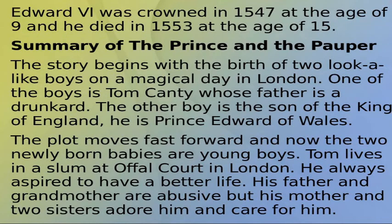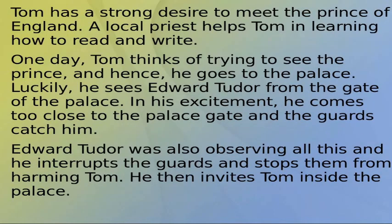The story begins with the birth of two look-alike boys on a magical day in London. One of the boys is Tom Canty, whose father is a drunkard. The other boy is the son of the King of England — Prince Edward of Wales. The plot moves forward and the two newly born babies are now young boys. Tom lives in a slum at Offal Court in London. He always aspired to have a better life; his father and grandmother are abusive, but his mother and two sisters adore him.